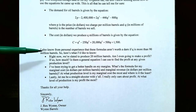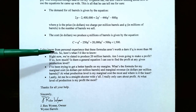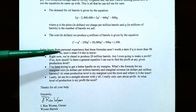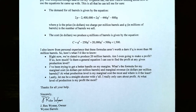The company's owner also knows from personal experience that these formulas — the demand for oil barrels and the cost — aren't worth anything if Q exceeds 19 million barrels. So Q has a constraint: it cannot exceed 19 million.